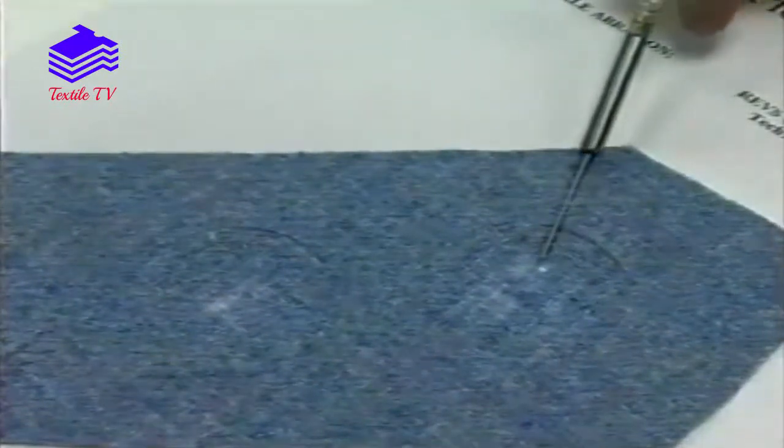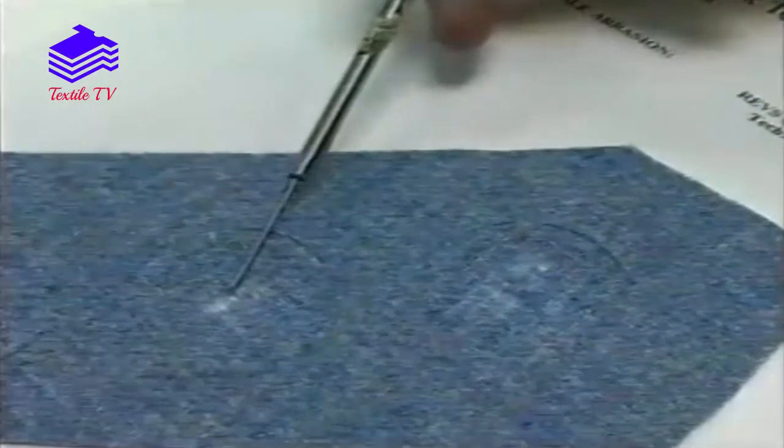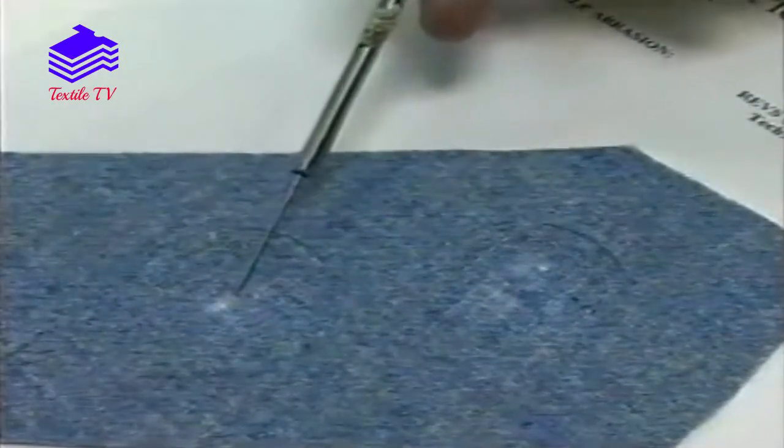The test ends when a prescribed number of threads have broken on plain fabrics or when there is a significant change in appearance of pile fabrics.